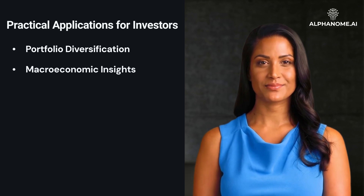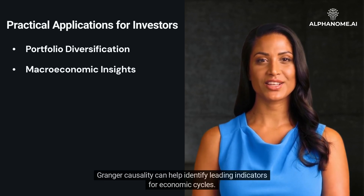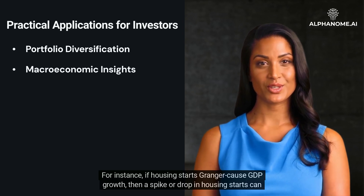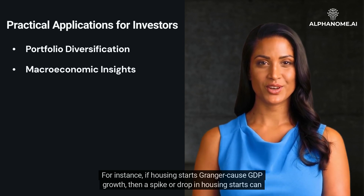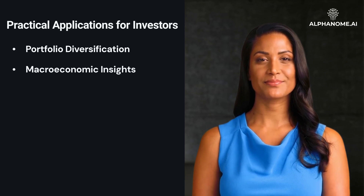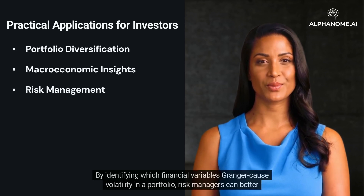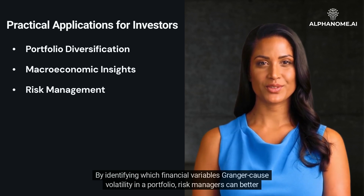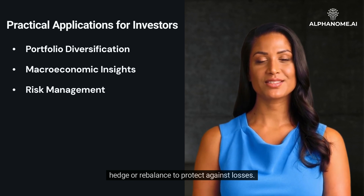Macroeconomic Insights: Granger Causality can help identify leading indicators for economic cycles. For instance, if housing starts Granger-cause GDP growth, then a spike or drop in housing starts can be an early signal for future economic activity. Risk Management: By identifying which financial variables Granger-cause volatility in a portfolio, risk managers can better hedge or rebalance to protect against losses.